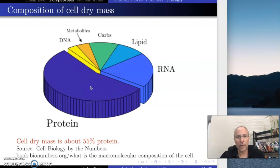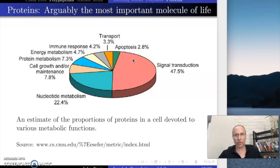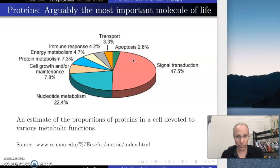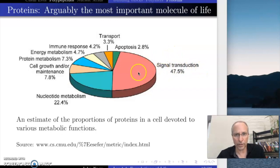Of all of these things, which one looks to be the most important? Well, it seems to be the proteins, because the vast majority of the material in your body that's not water is protein. So what is it that the proteins do? Here's another pie chart that'll give you some sense of it — we haven't talked about what a lot of these things are yet, but we're going to talk about them later in the course.